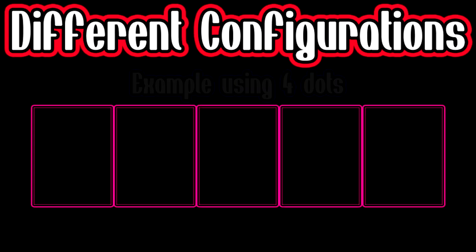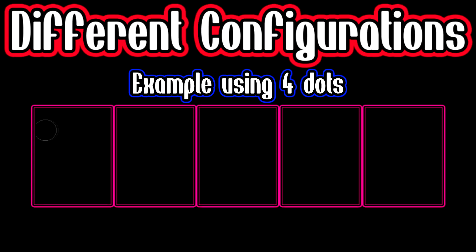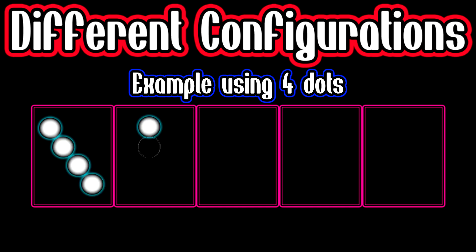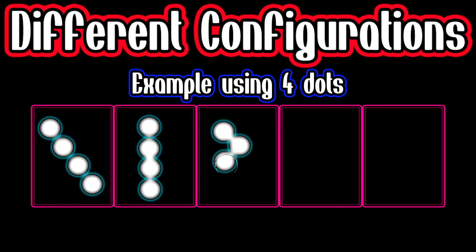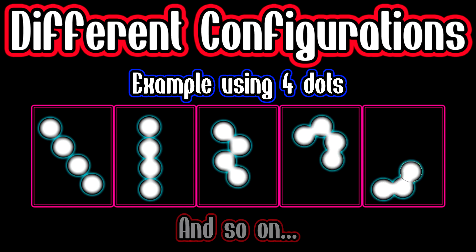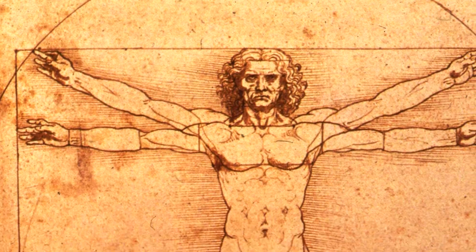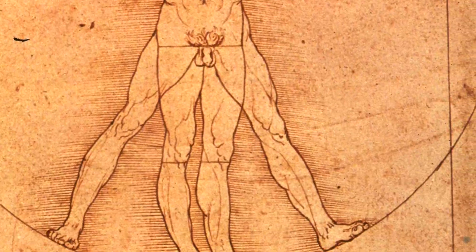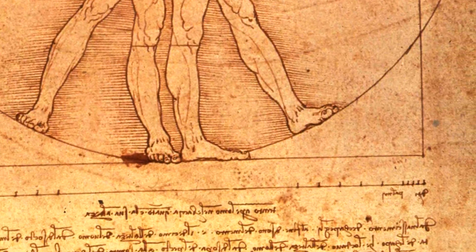This number describes the number of different configurations that can exist within a one meter cubed piece of volume. It could be empty, or it could be arranged in this many different ways — and one of these configurations is the way you are arranged.